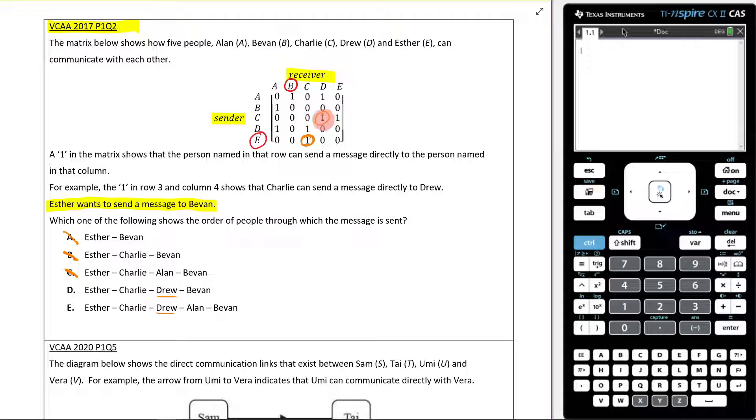And then that means who can Drew send it to? Well, Drew can send it to either Alan - and there's no point sending it back to Charlie, is there? So it's going to be through Alan. He can't send it to Bevan, so that's D out. My answer has to be E. That's really quite mean they put that as the very last one, but that's the kind of thinking that you would use to get that.